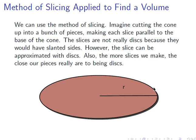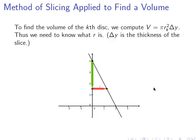So here's how we can do it. We're going to use the method of slicing. We're going to imagine cutting the cone up into a bunch of pieces. And we're going to make each slice parallel to the base of the cone. Now the reason I'm choosing slices parallel to the base is because if I do that, my slices will be disks. Okay. They won't really be disks because the sides would be slanted. But it's going to be a close enough approximation. So the more slices we make, the closer our pieces really will be to actual disks.